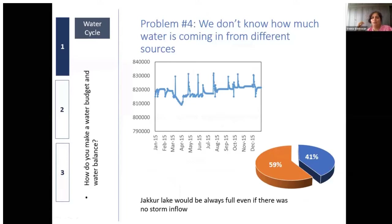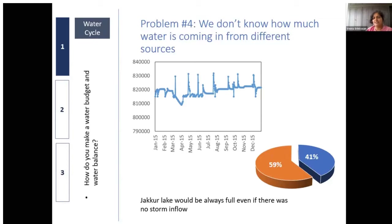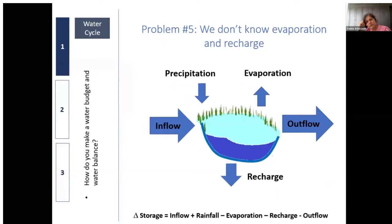We also don't know how much water is coming from different sources into a particular lake — how much is stormwater versus sewage. We did this for Jakkur lake by putting instrumentation in some of the inlets — it's tricky because inlets keep shifting in Bangalore as it's a dynamic situation. The principle: put a stage sensor, convert stage into flow, measure over time, add up flow rates over the days, and that tells you how much came from sewage inlets, how much from the STP, and how much from stormwater.